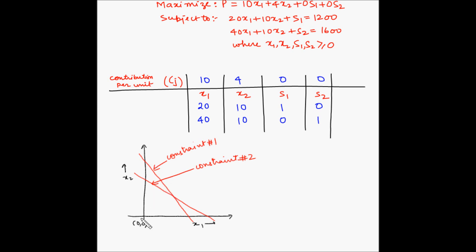The area which is common to both the constraints — let's say this is O, A, B, and C — is the feasible region.